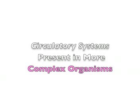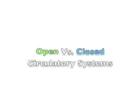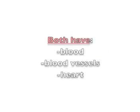Circulatory systems are present in more complex organisms. There are two basic types in animals: open and closed circulatory systems. Both types of systems have blood, blood vessels, and a heart.